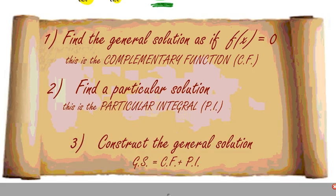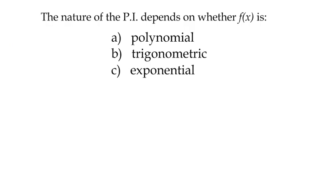The general solution is still general because we've still got constant terms in it. It's the sum of the complementary function and the particular integral. So it sounds a bit more complex, but as long as you follow the steps it should work out. Let's look at what your particular integral needs to look like — it depends on the nature of the right-hand side.